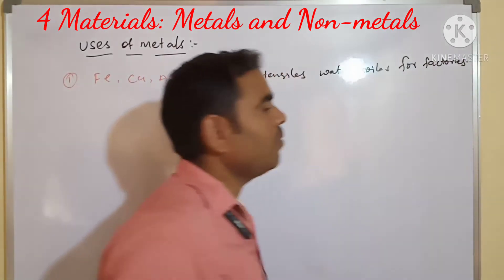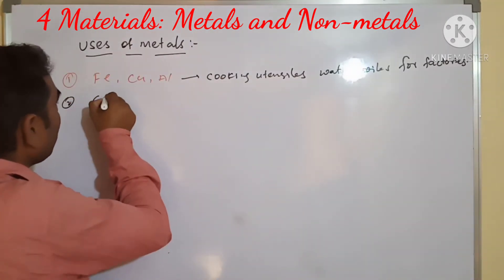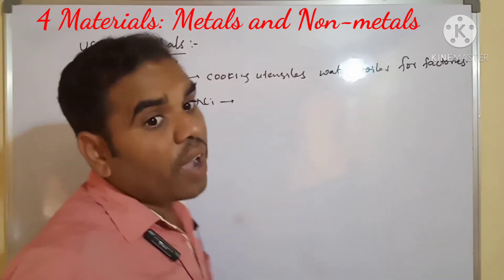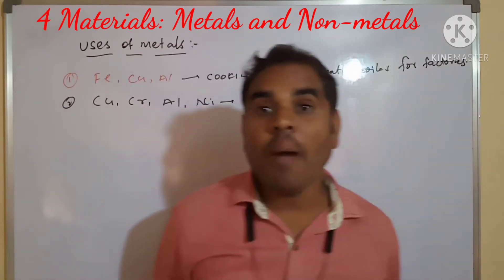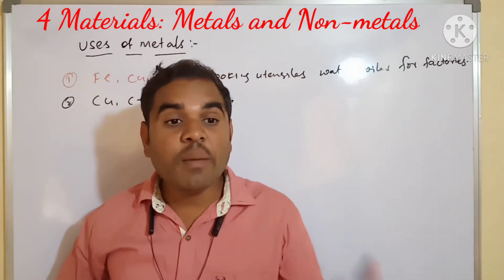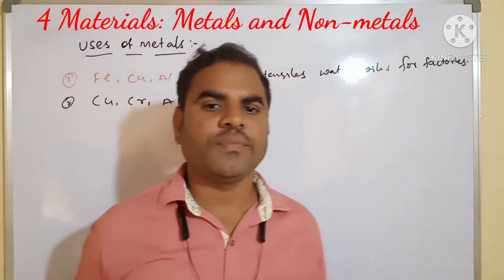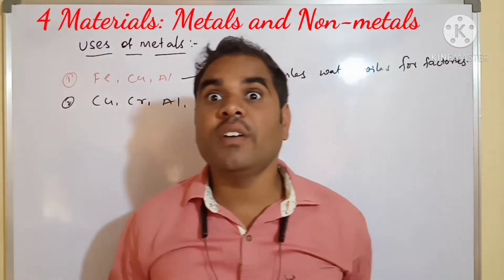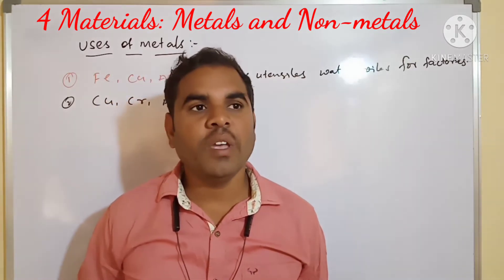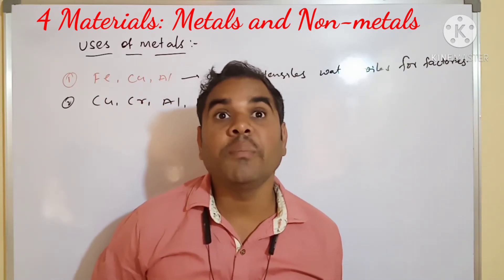Copper, chromium, aluminum, and nickel wires are used for household wiring and electric motors and armatures, and many other electric appliances. Aluminum is used for electric cables and overhead electric lines. For street lights, aluminum wires are used.